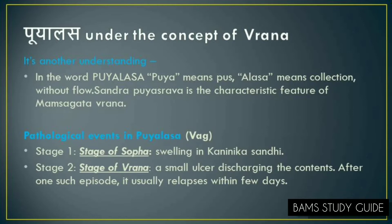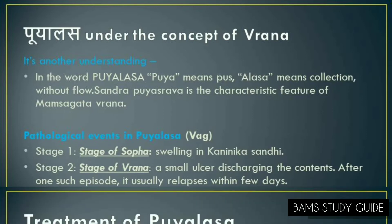Acharya Vagbhatta described: 'Pooyalasu Vrana Sukshma Shofa Samrambha Poorvakaha Kaninya Santhavatmai Pooya Shravi Sa Vedanaha' — Sandhra Pooya Shrava is the characteristic feature of Mamsa Katha Vrana. According to Vagbhatta, the pathological events in Pooyalasa include two stages: Stage 1, the stage of Shofa, with swelling in Kaninika Sandhi; and Stage 2, the stage of Vrana, where a small ulcer forms and discharges its contents.